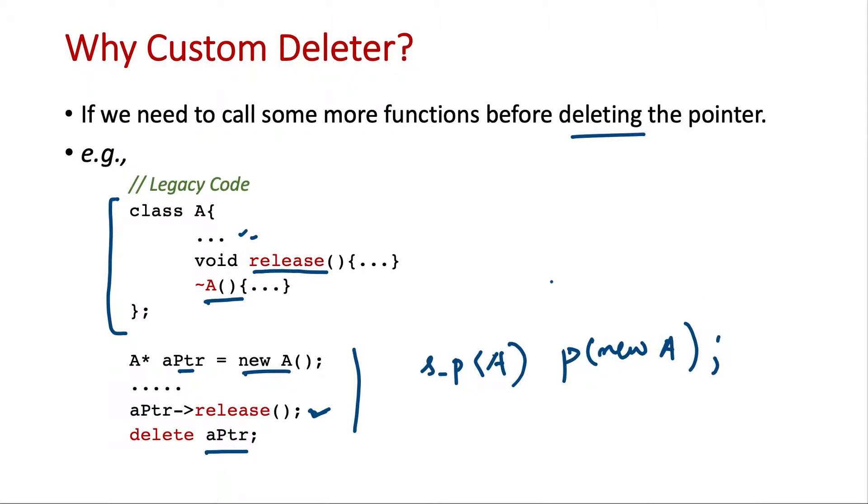Then it will use the default deleter where it will call the delete on this pointer of type A, and which will call the destructor. So this release method will never be called. So the resource deallocation will not be complete. So it will be partial and there will be memory leak. So we need a custom deleter in such situations.